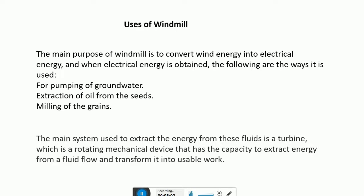A wind turbine converts the kinetic energy of wind motion to mechanical energy, which is transmitted by the shaft. A generator further converts this into electrical energy. The main purpose of a windmill is to convert wind energy into electrical energy. It is used for pumping of groundwater, extraction of oil from seeds, and milling of grains. The main system used to extract energy from these fluids is a wind turbine, which is a rotating mechanical device that extracts energy from fluid flow and transmits it into usable work.